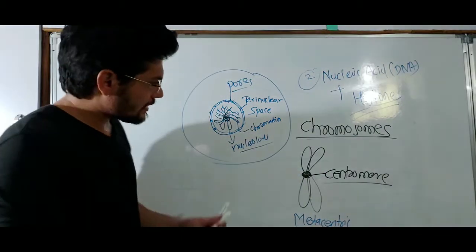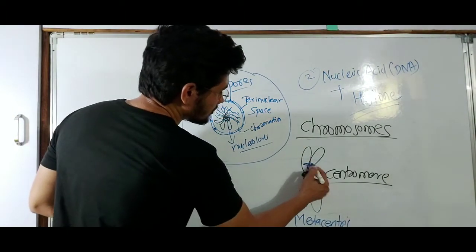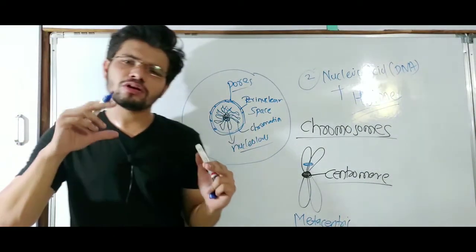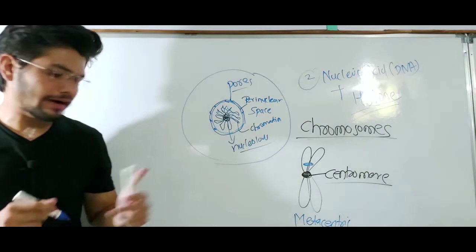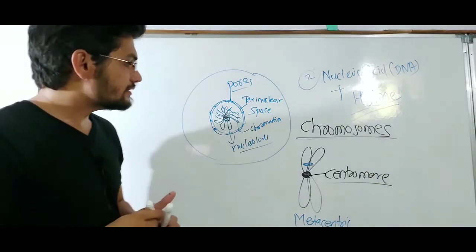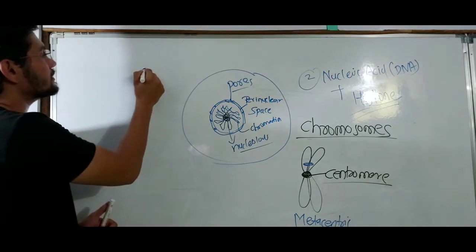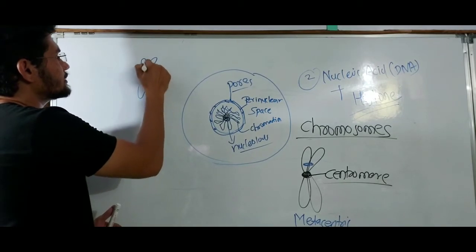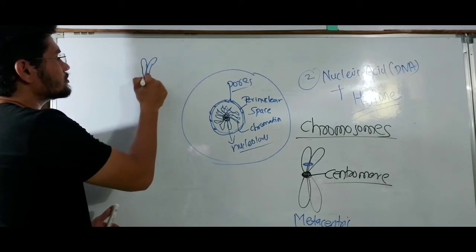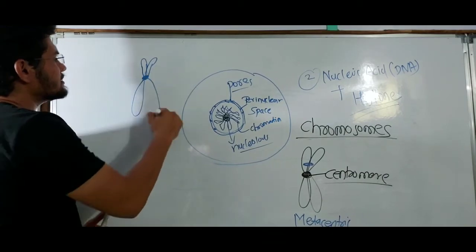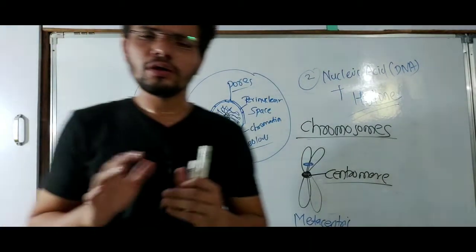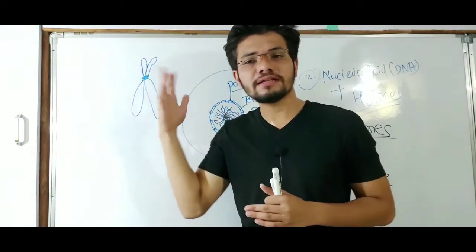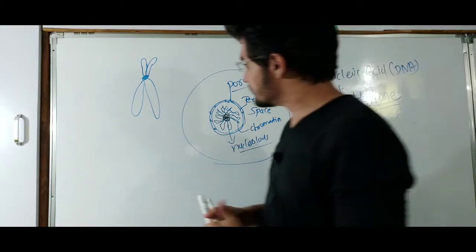If the centromere is present somewhere slightly off-center, it will divide the chromosome into two unequal parts — one part slightly longer than the other and one part slightly shorter. Suppose the centromere is here, dividing the chromosome into two parts where one arm is slightly longer than the other arm. This structure is known as submetacentric.